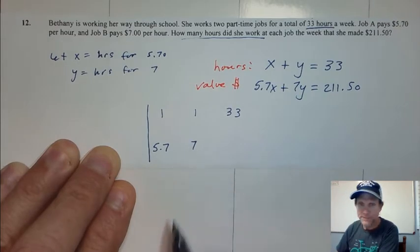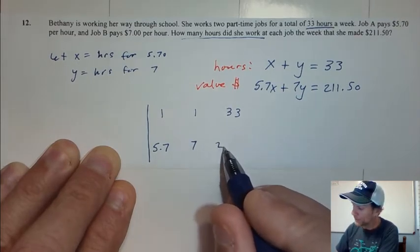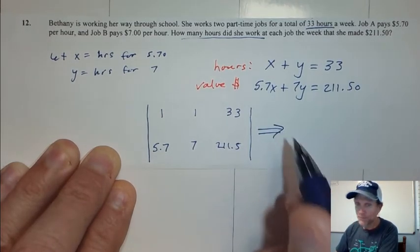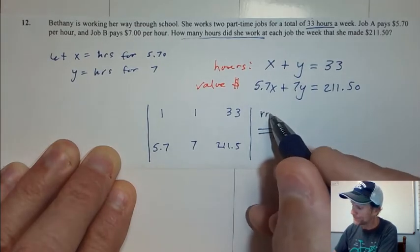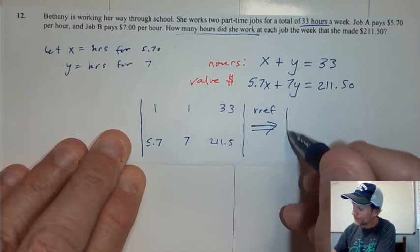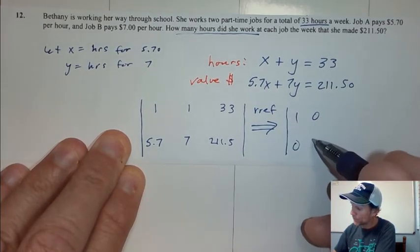So, 1, 1, 33, 5.7, 7, 211.5. And once I run rref here on my TI-84, I'll get my familiar 1, 0, 0, 1.